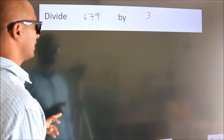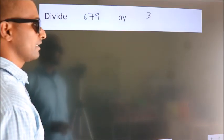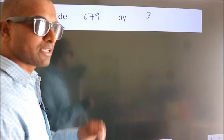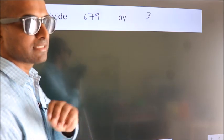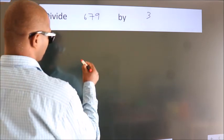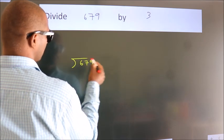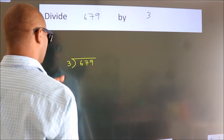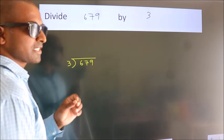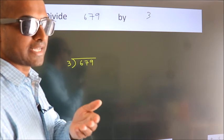Divide 679 by 3. To do this division, we should frame it in this way. 679 here, 3 here. This is your step 1. Next.